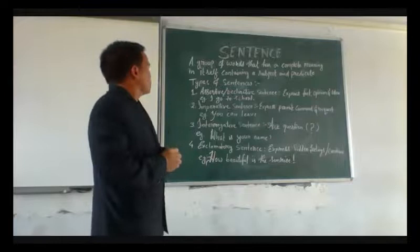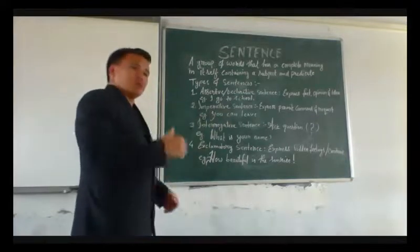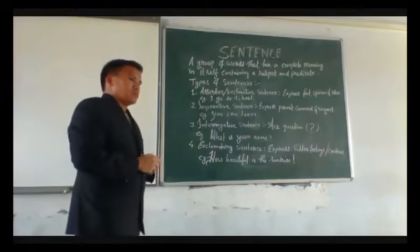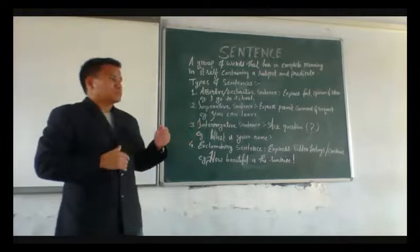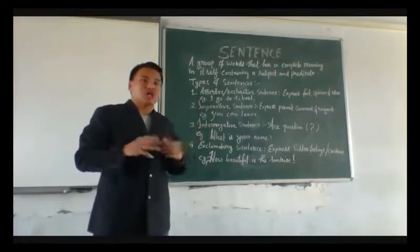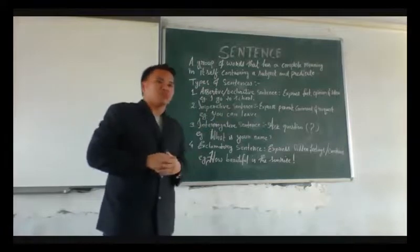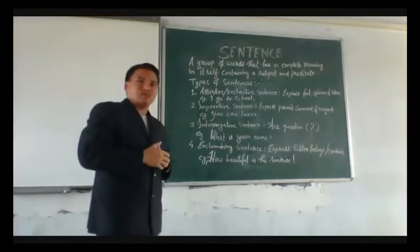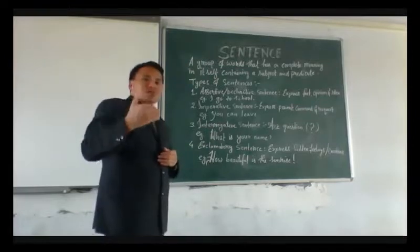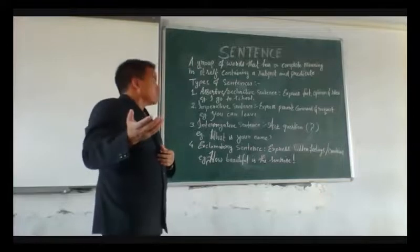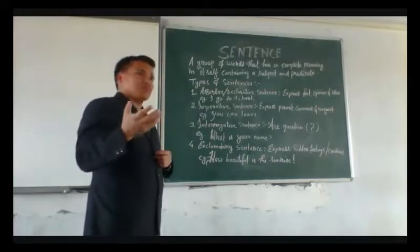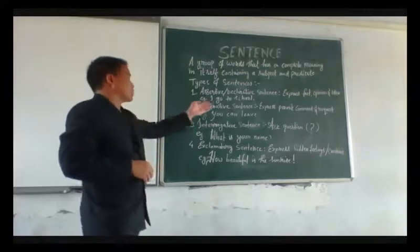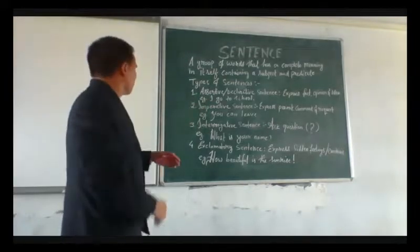We can take an example here, like 'You can leave.' A permission is given here that you can leave. Or another example, we can say 'Get out of the class' — it's a command, meaning you should get out of the class. Or we can also take the example, 'May I come in and serve.' This is also a request being done by someone. When a request is being done, we call it an imperative sentence.